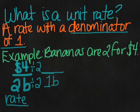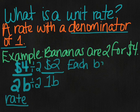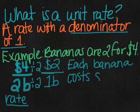And then four divided by two is two dollars. So our unit rate is two dollars per one banana, two dollars per banana, or each banana costs two dollars.